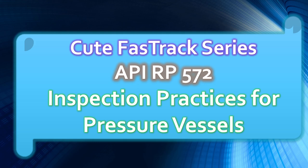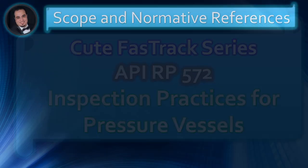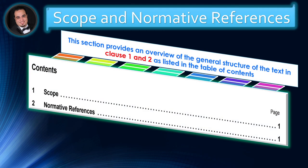Welcome to Qt Fast Track Series for API Recommended Practice 572, Inspection Practices for Pressure Vessels. In this lecture, we will discuss the scope and normative references of API RP 572. This section provides an overview of the general structure of the text in Clause 1 and 2, as listed in the Table of Contents. In the following slides we highlight important information contained in Clause 1 and 2.